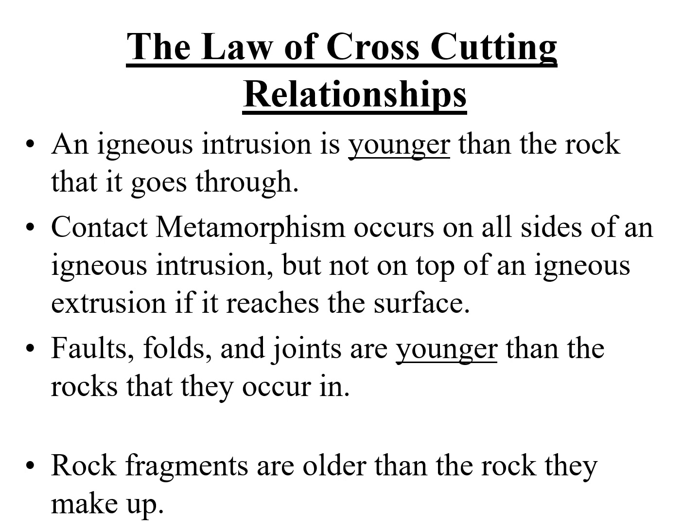The law of cross-cutting relationships: an igneous intrusion is younger than the rock that it goes through. Contact metamorphism will occur on all sides of an igneous intrusion, but not on top if it reaches the surface — so if you have a lava flow, the top is in contact with the air. Folds, faults, and joints are younger than the rocks they occur in. Rock fragments must be older than the rock they make up.